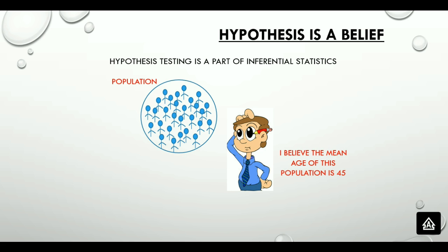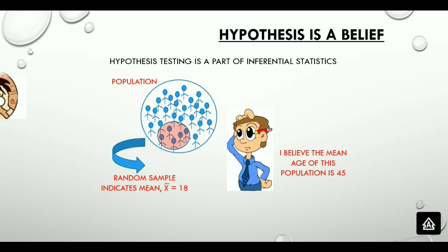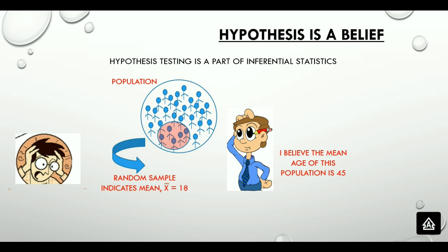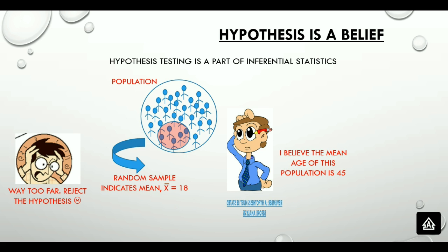We then pull out a random sample and find that the mean age is actually 18. It is way too distant from what we had assumed, so we have to reject our hypothesis. Remember, a hypothesis must be stated before analysis.